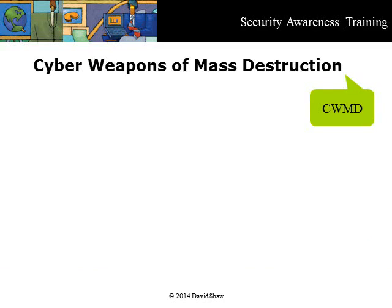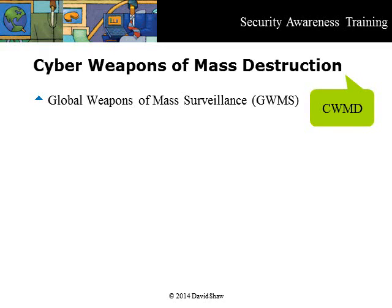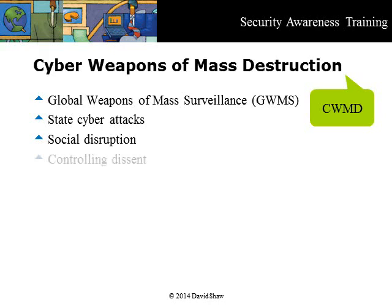Cyber weapons of mass destruction fall into several categories, of which these are the most important: global weapons of mass surveillance, orchestrated by the United States and its partners; state cyber attacks, done by several nations; social disruption of other countries to achieve foreign policy goals; and controlling individuals and group dissent.